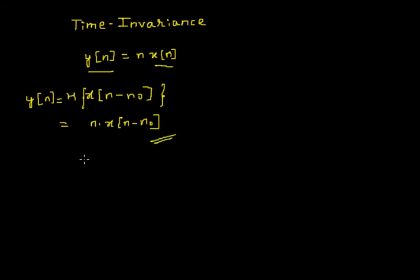Next, I have to consider a shift in the output. The output signal is y[n] and a shift in the output means y[n-n₀]. I already have the expression for y[n]: y[n] = n·x[n].